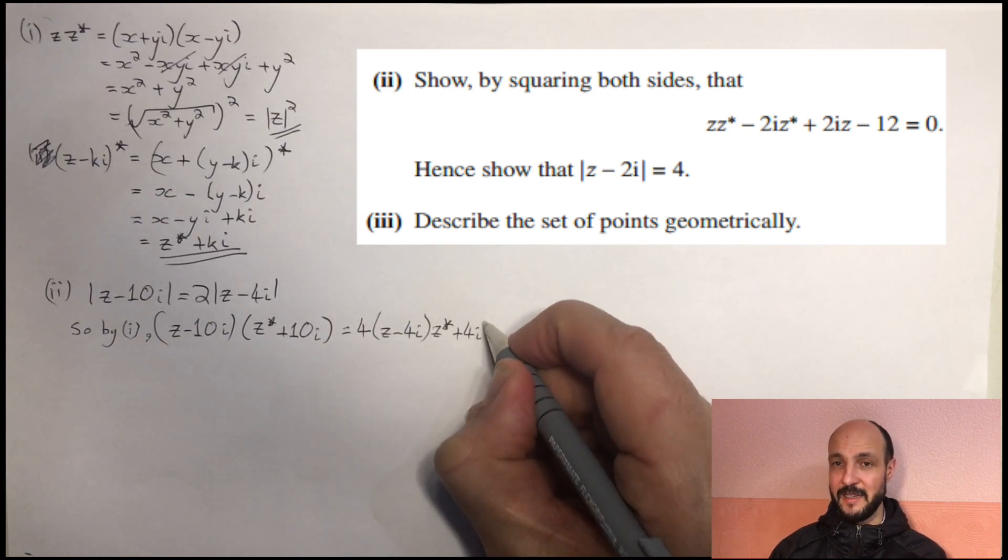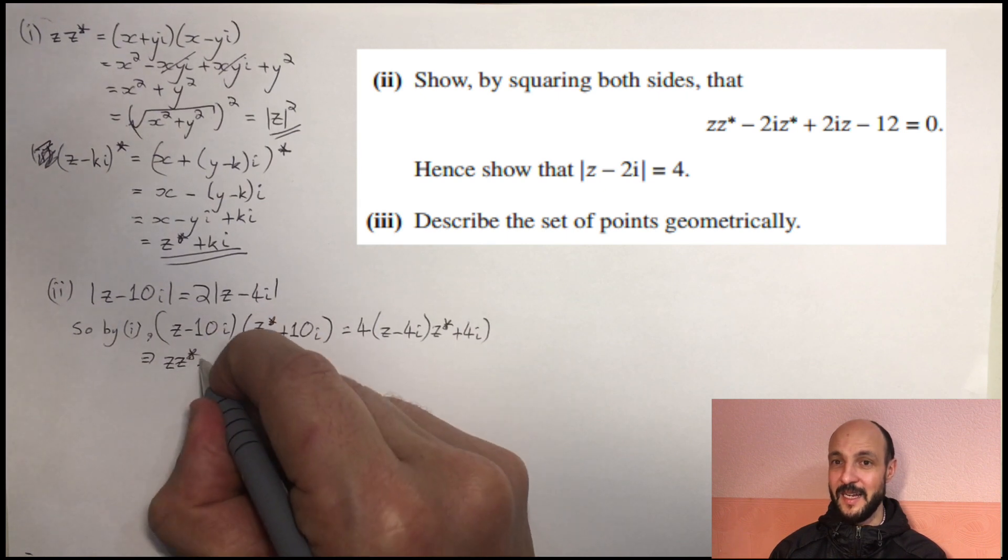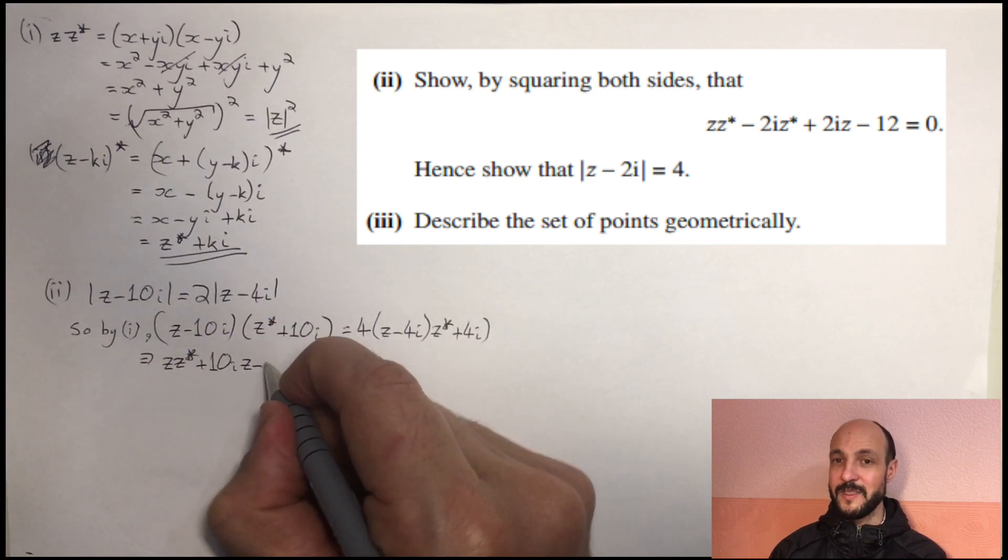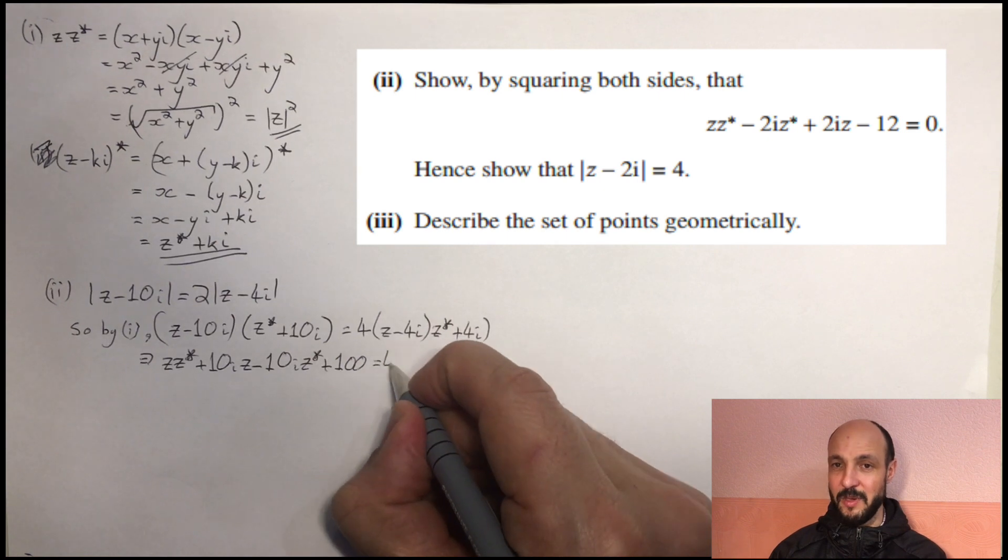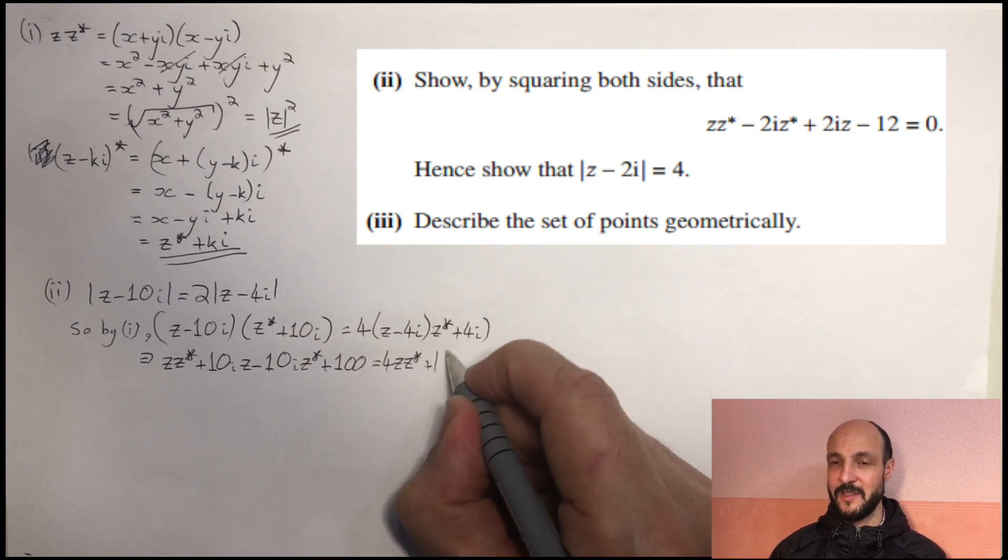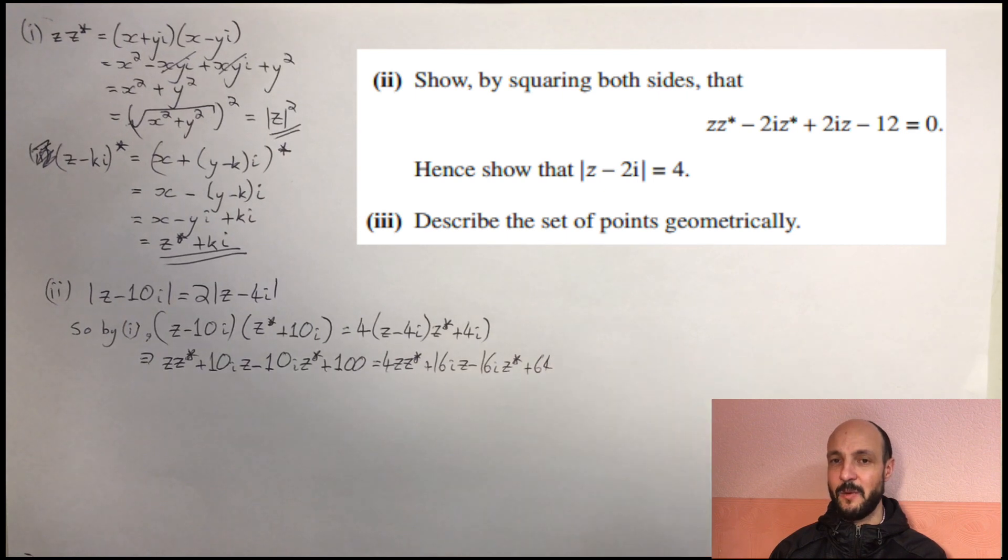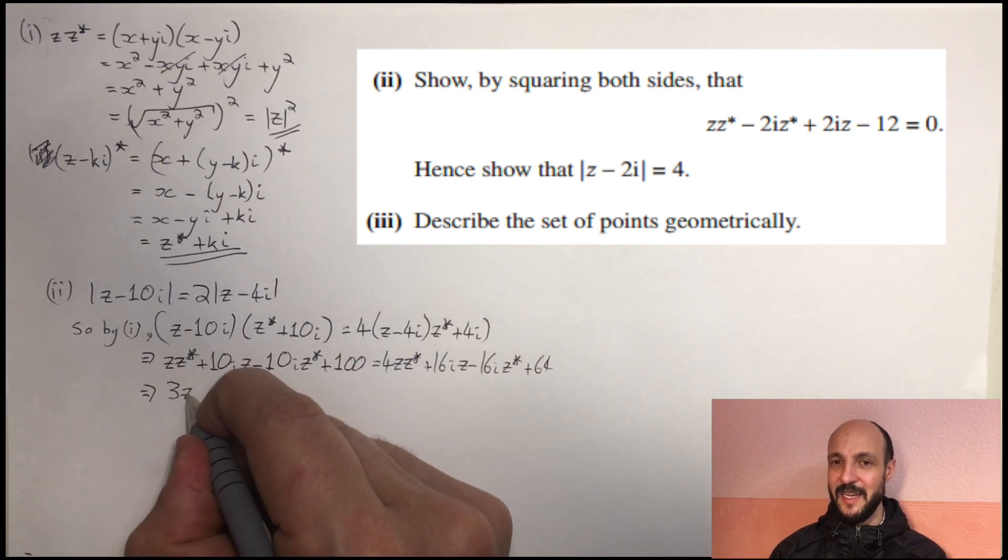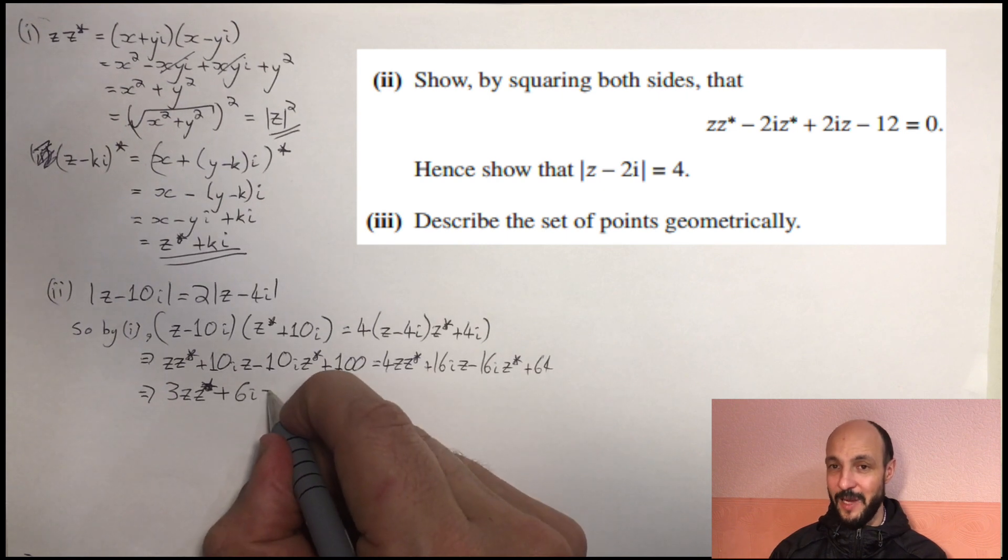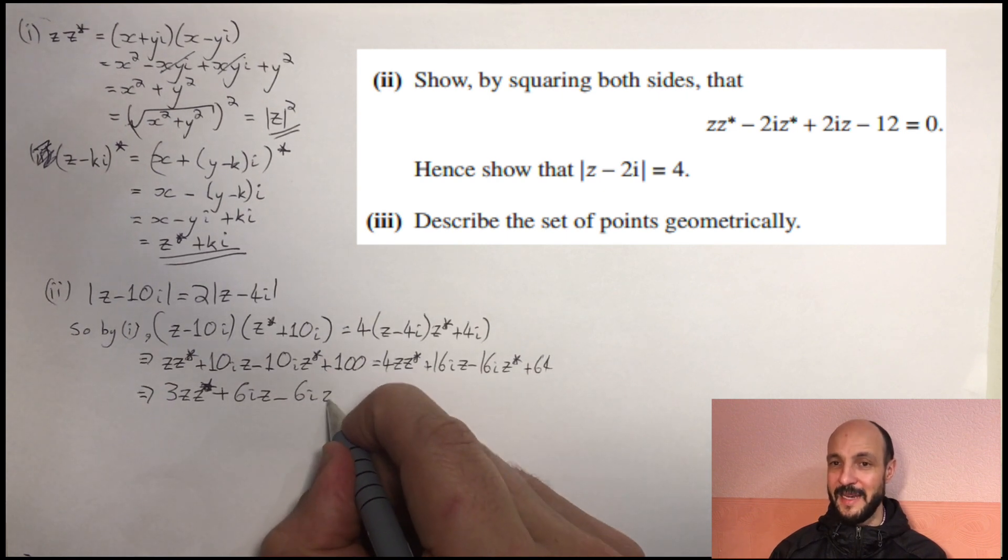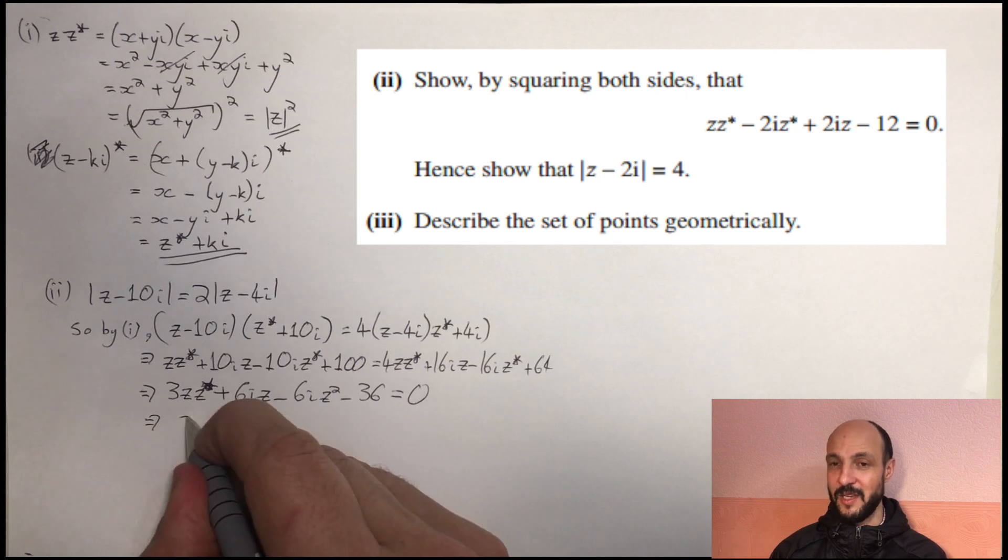And then, it's just a case of expanding the brackets. On our left-hand side, we've got zz star plus 10iz minus 10iz star plus 100 is equal to 4zz star plus 16iz minus 16iz star plus 64, just simply by expanding the brackets and making sure on the right-hand side we're multiplying each of the terms by 4. So then, in order to get all these on one side, let's get them on the right-hand side of the equation. So if we subtract both sides by zz star, we get 3zz star. If we subtract 10iz from both sides, we get plus 6iz. If we add 10iz star to both sides, we get minus 6iz star. And then if we subtract 100 from both sides, we get minus 36. And we've cancelled everything on the other side, so equal to 0.